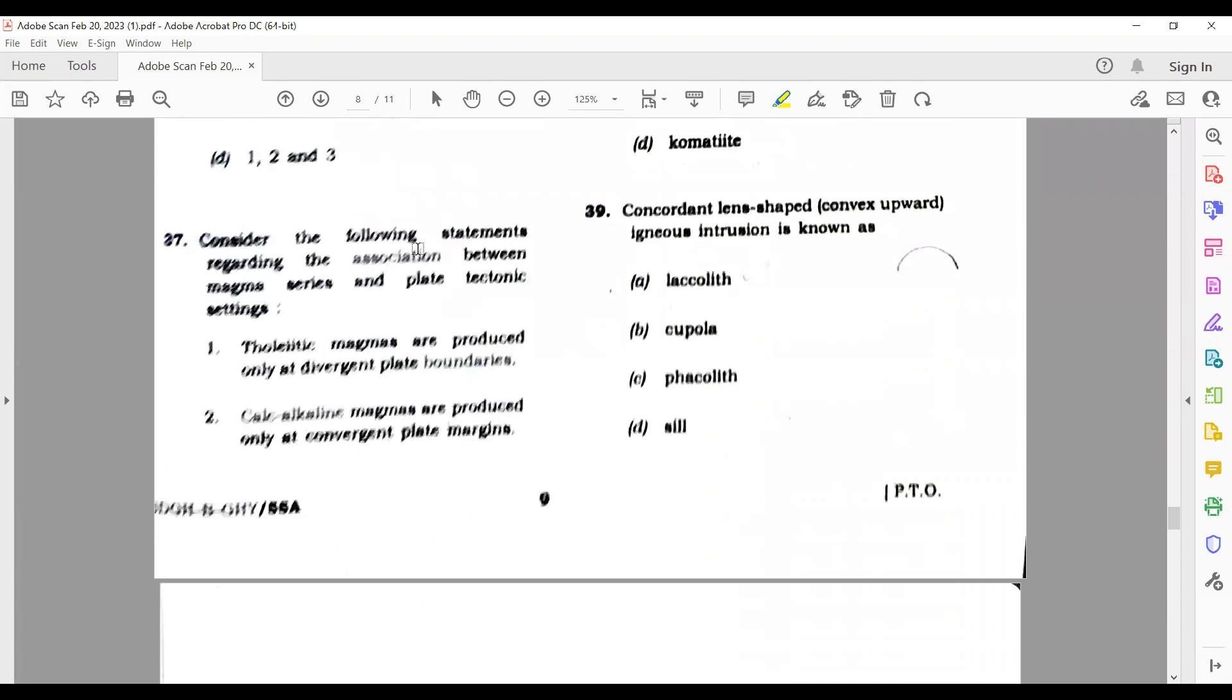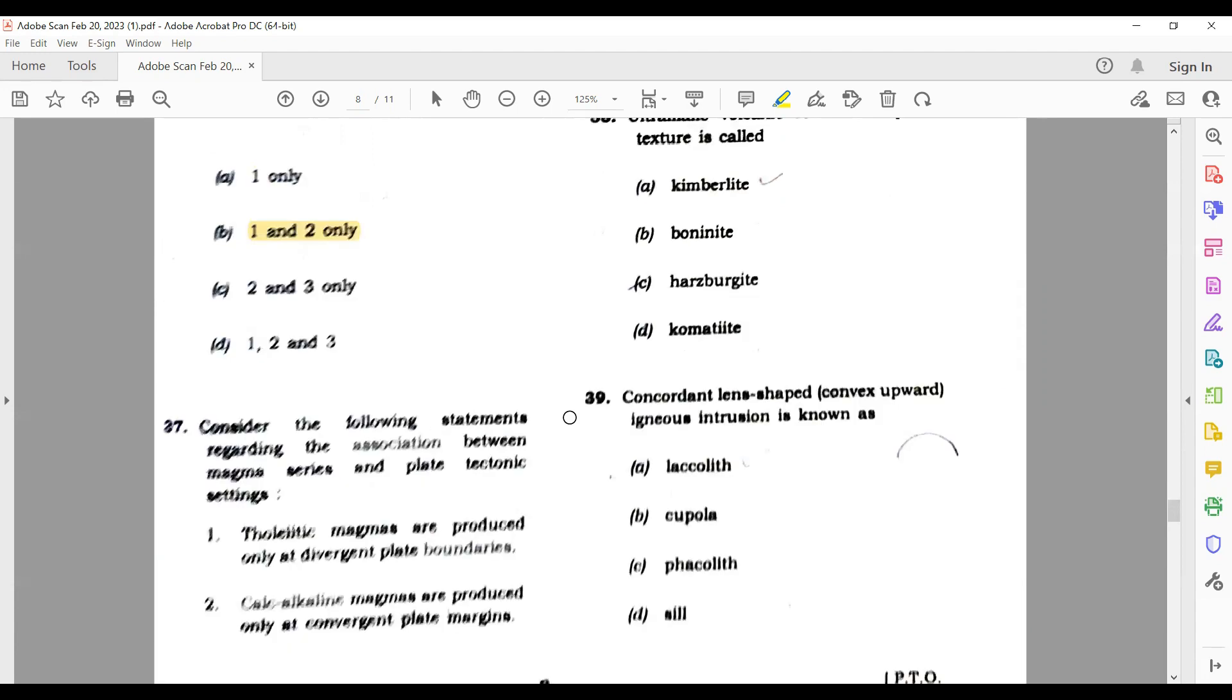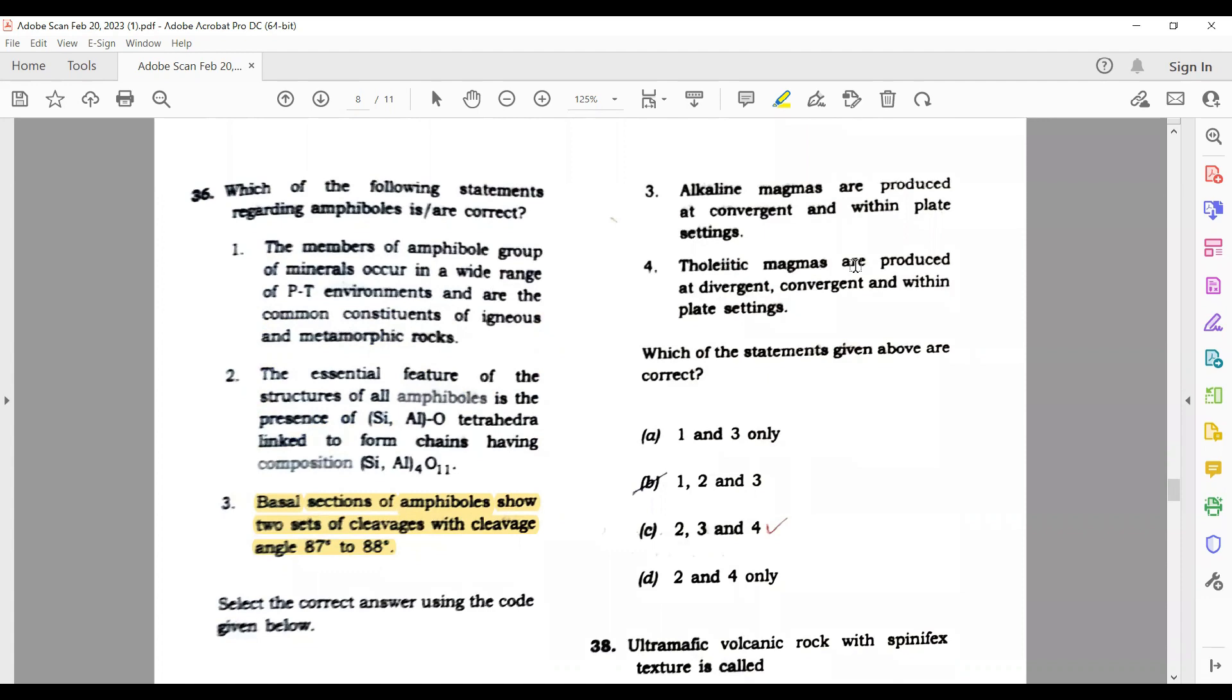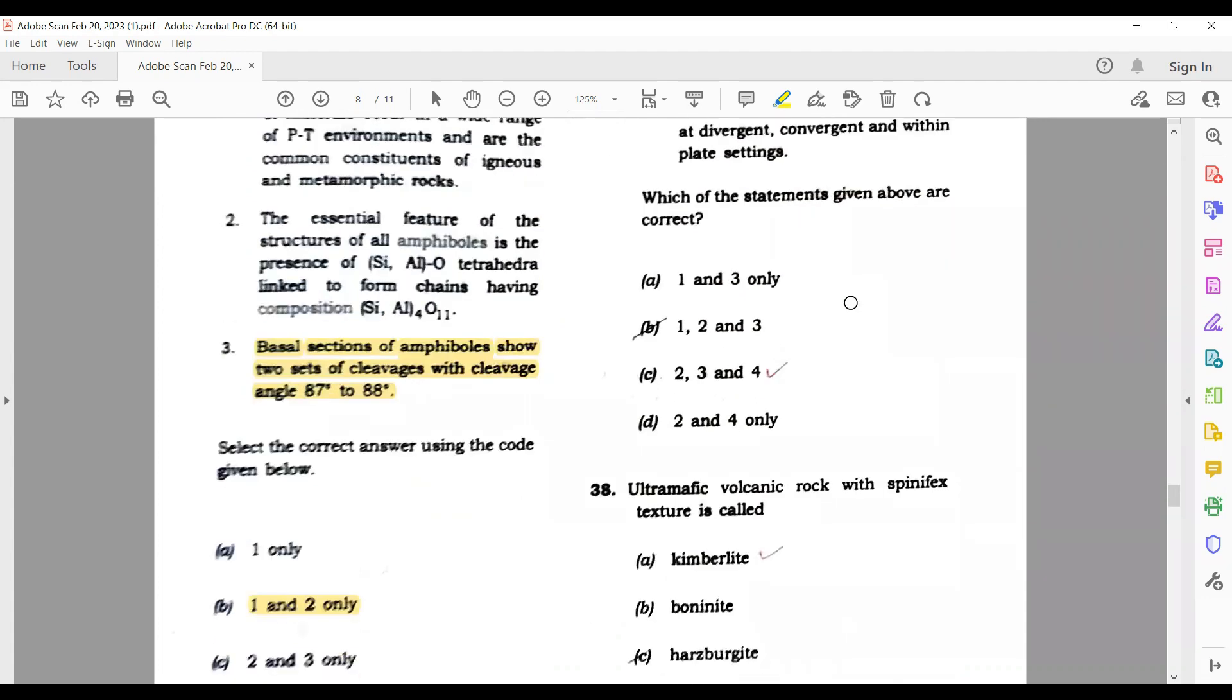Consider the following statements regarding the association between magma series and plate tectonic series. Tholeiitic magmas are produced only at divergent boundaries? No, they can produce at other settings also. Calc-alkaline magmas are produced only at convergent boundaries? Yes. Alkaline magmas are produced at convergent and within plate? Yes. Tholeiitic magmas are produced at divergent, convergent? Yes. So its answer is 2, 3 and 4.